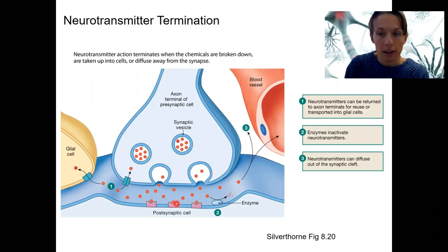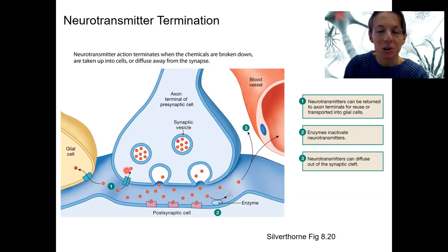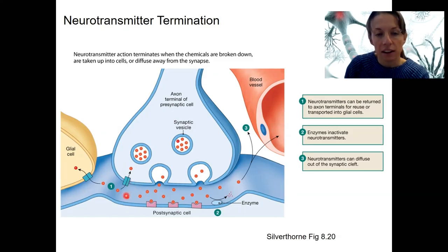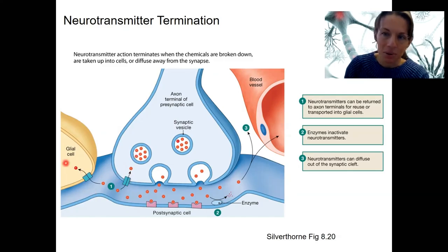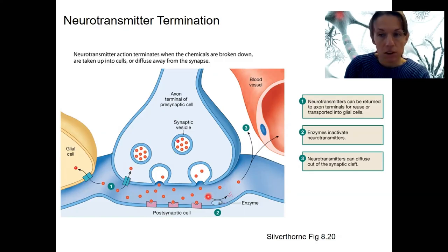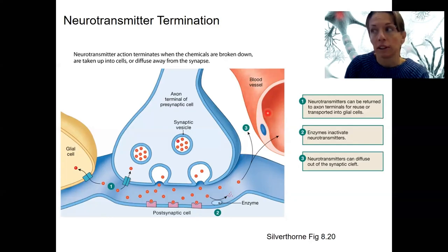This removal can happen three different ways. First, the neurotransmitter can be returned to the axon terminals — this is called reuptake. You may have heard of SSRIs, selective serotonin reuptake inhibitors, which act by inhibiting this process so more serotonin remains in the cleft. Glial cells can also take up neurotransmitters. Second, enzymes can break down neurotransmitters via a chemical reaction. Third, neurotransmitters can simply diffuse away — into blood vessels or glial cells.